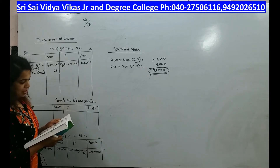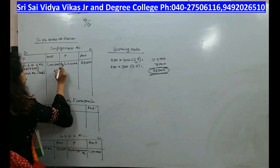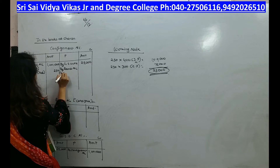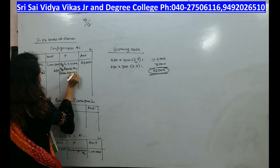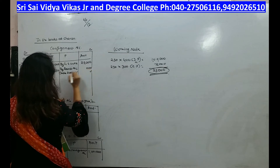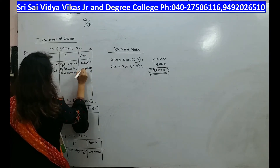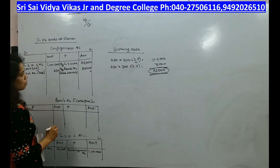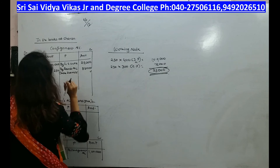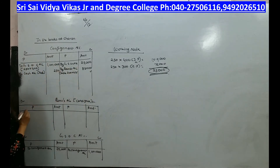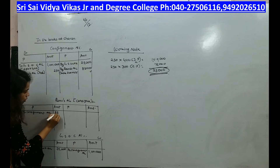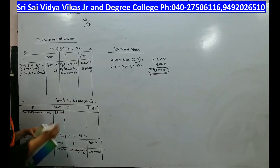Ramu informed through account sales that 200 cases were sold at rupees 425 each. So here we write: by Ramu's account (sales) — 200 into 425 equals 85,000. In Ramu's account we write: to consignment account 85,000.